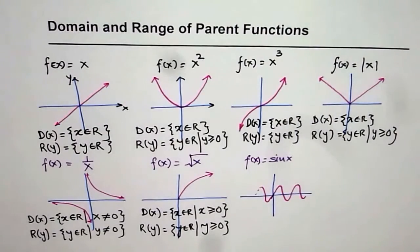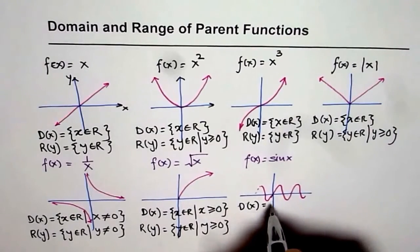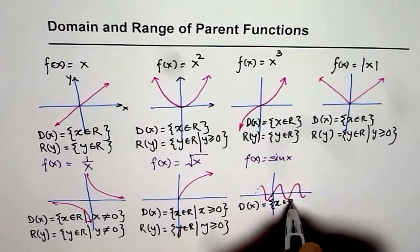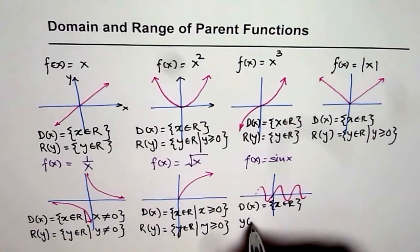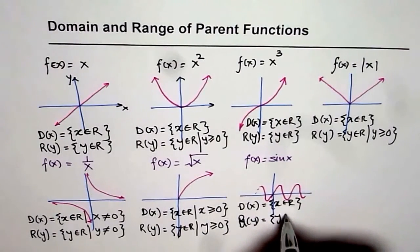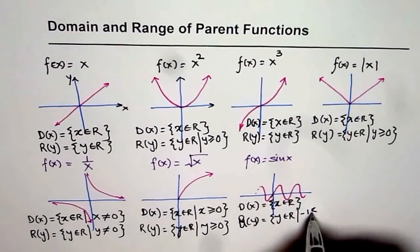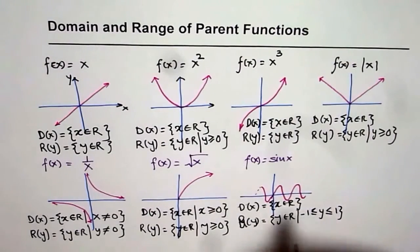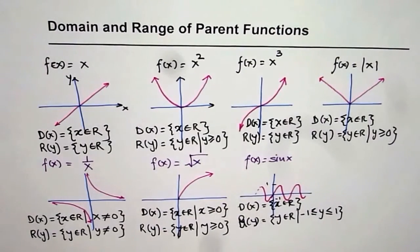The domain of sin x is not restricted — x belongs to real numbers. However, range is restricted. The range is y belongs to real numbers, but the value of y is between plus and minus 1: greater than or equal to minus 1 and less than or equal to plus 1, since sin x has a maximum value of 1 and a minimum of minus 1.